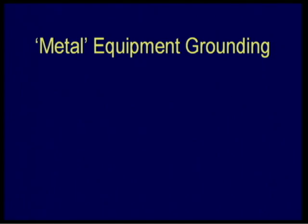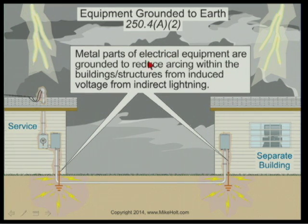So we've got to understand what is the purpose of grounding. That has to do with system grounding. And Beeman said there's two types: system grounding and equipment grounding. Let's move now into equipment grounding — really, metal equipment grounding. It's real simple: metal parts of electrical equipment are grounded to reduce arcing within the building structure from induced voltage from indirect lightning. Equipment grounding is different than system grounding — electrically the wire looks the same, but conceptually it's different. You're not likely to kill anybody if you don't have proper system grounding because it's the equipment itself that's going to fail. But equipment grounding is different.